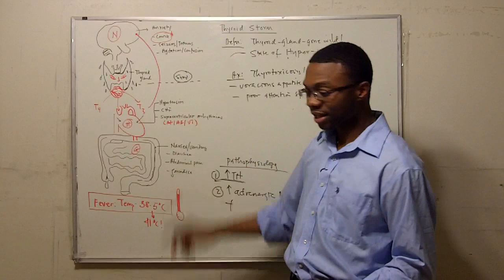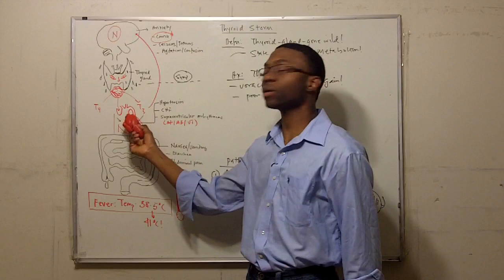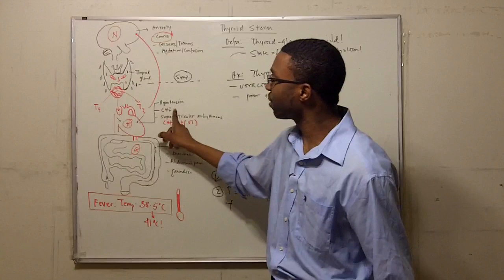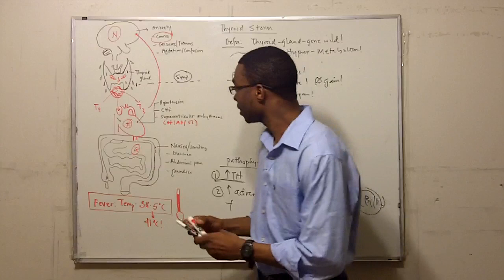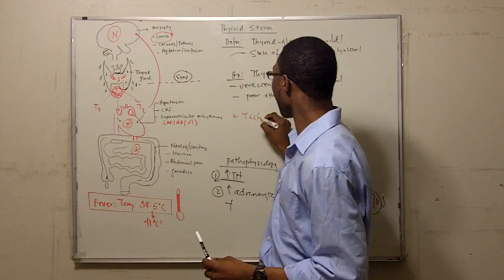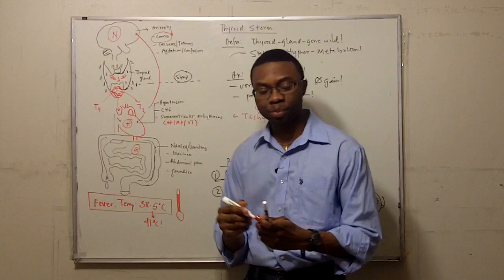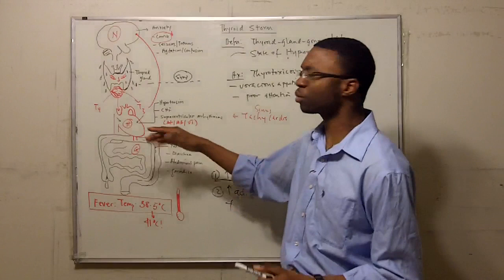These patients also develop heart failure because their heart is trying to contract as fast as they can. Eventually, it can't anymore. They develop symptoms of heart failure. They can actually develop pulmonary edema because the blood is backing up into the lungs. Because of the increased heart rate, this patient's going to have tachycardia. They're going to have tachycardia. It could be just sinus tach, but eventually can progress to supraventricular arrhythmias. Oh, that's a big word for what? What is supra? Supra means above, right?